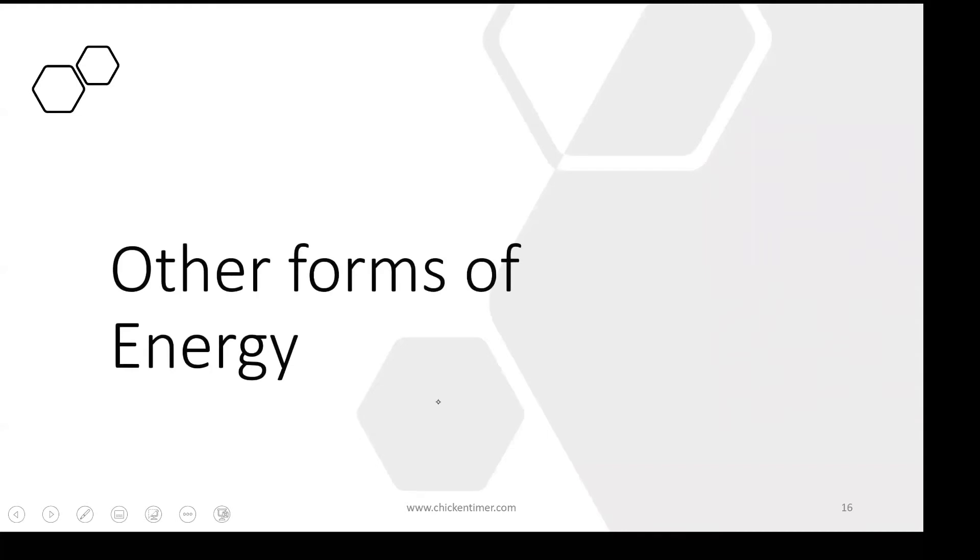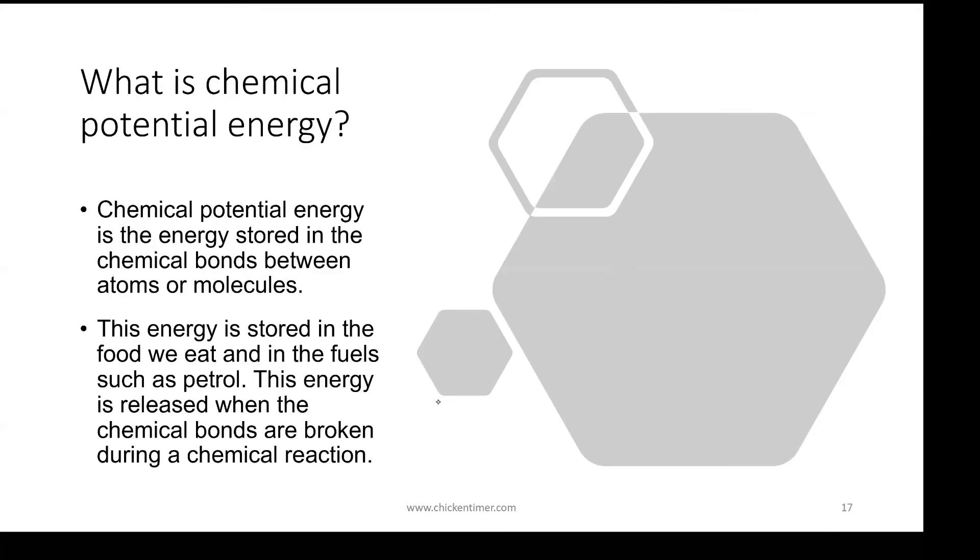So other than kinetic energy, gravitational potential energy and elastic potential energy, there are other forms. One form is chemical potential energy, sometimes written as chemical energy. It says it's the energy stored in the chemical bonds between atoms or molecules. But we're not doing chemistry. What you need to know is chemical energy is energy that is stored inside food or stored inside batteries. That is enough.